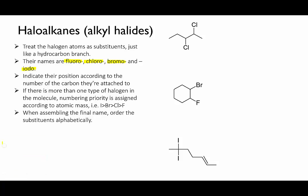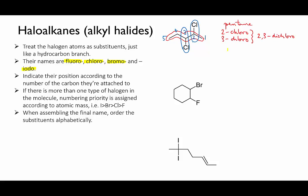Let's try naming this first one. The longest carbon chain here is obvious — it's pentane. So next we'll look at the substituents. There are no alkyl groups, only the two chlorine atoms. So we number the chain in order to give the chlorines the lowest possible number, which means numbering from the right. So we will have 2-chloro and 3-chloro. We can indicate two of the same substituent by using 'di', so we call it 2,3-dichloro. Putting that all together, we have 2,3-dichloropentane.